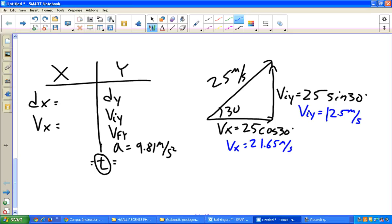And then what I do is I go ahead and I put those right in my table. So Viy is 12.5 meters per second, and Vx is 21.65 meters per second.